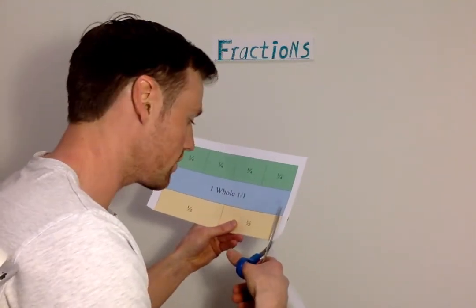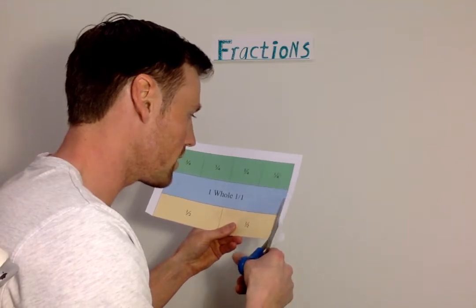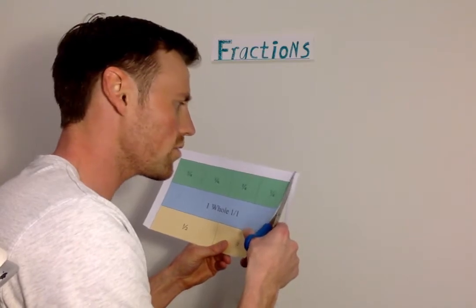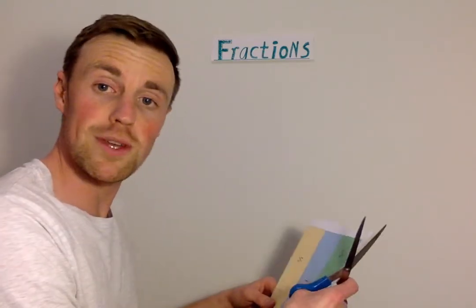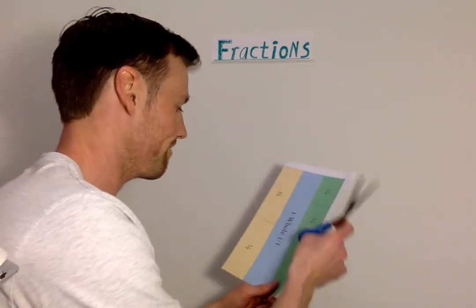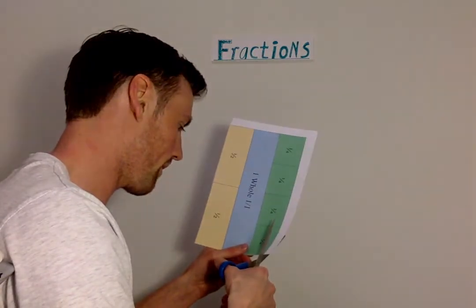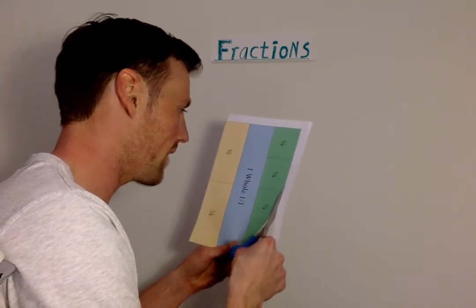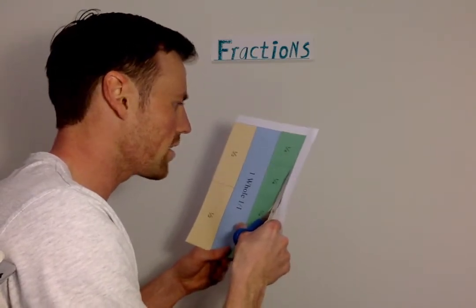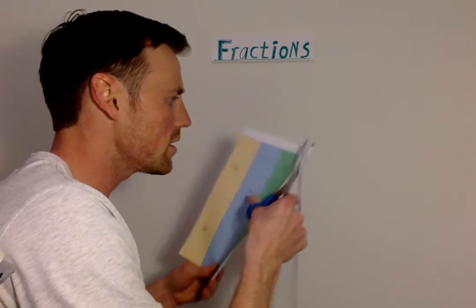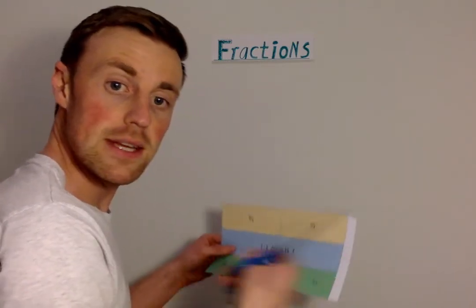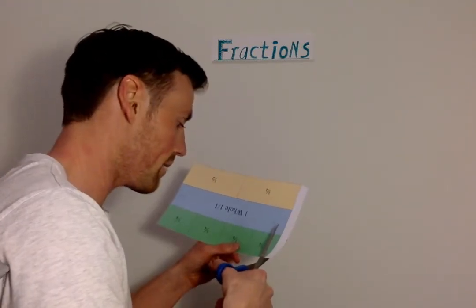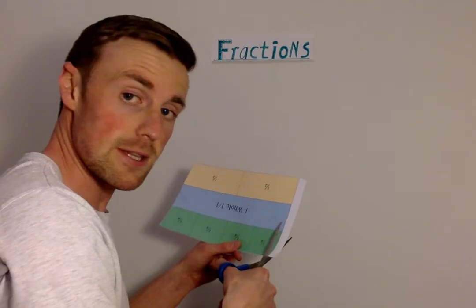See how I've gone around the edges? Now it doesn't matter how long you take, you don't have to do it very quickly, as long as you do it neatly, because if you don't cut neatly, that means the pieces won't be equal. That means they are not really a fraction.